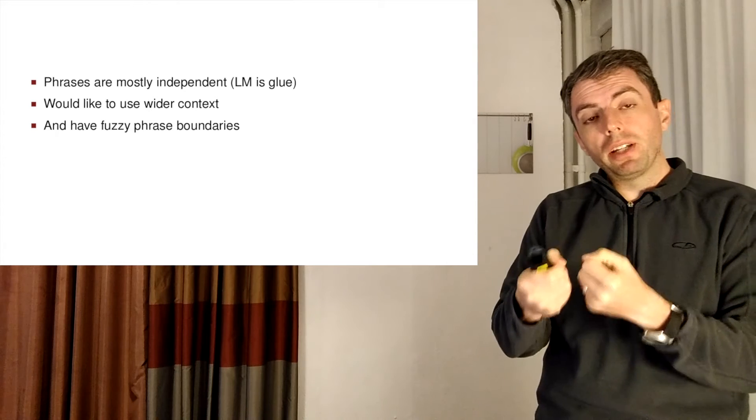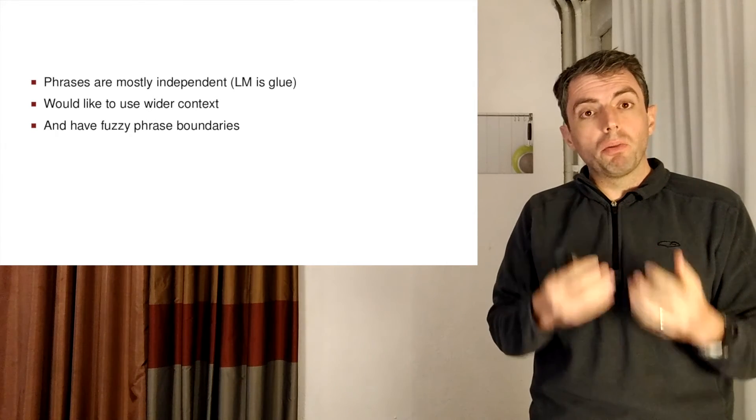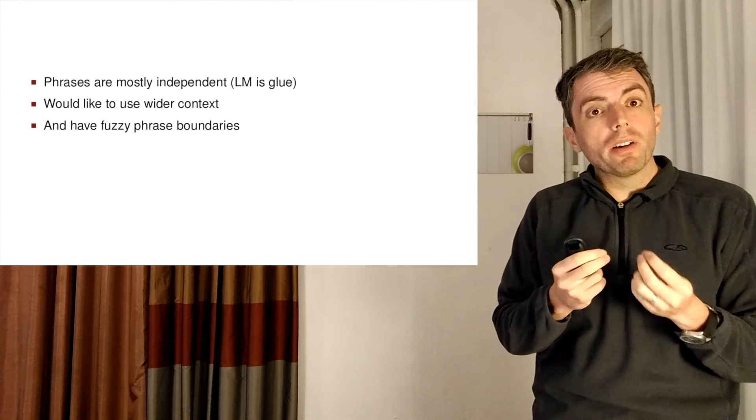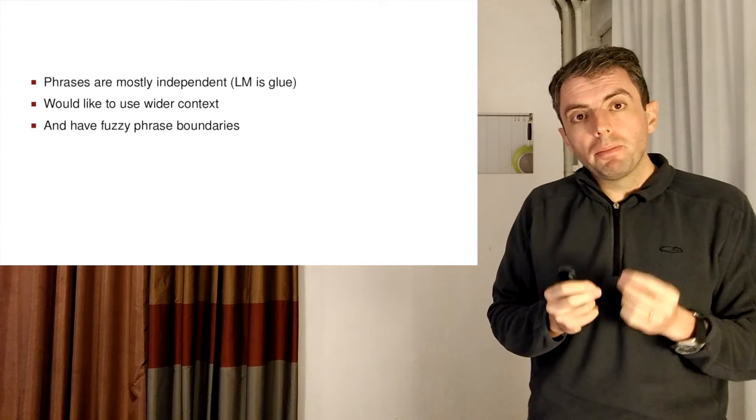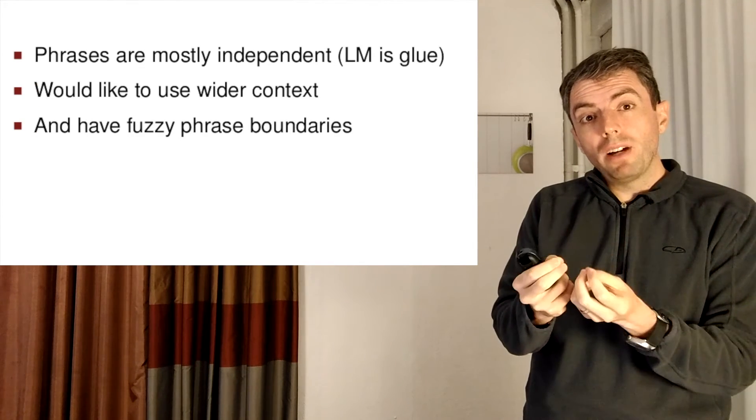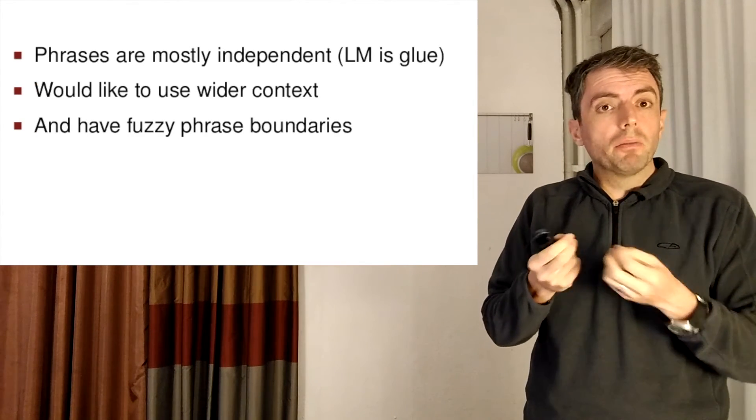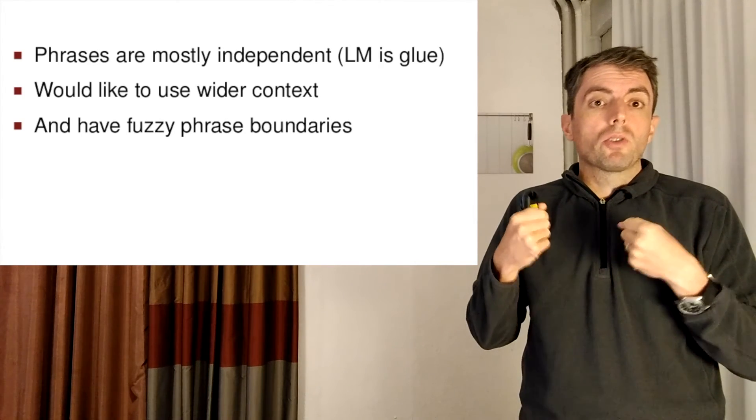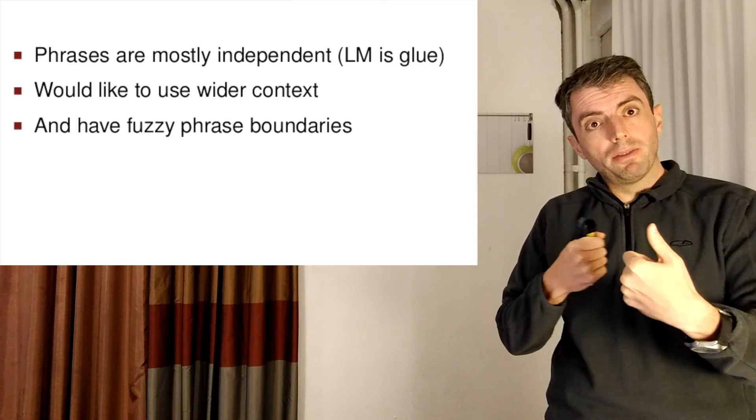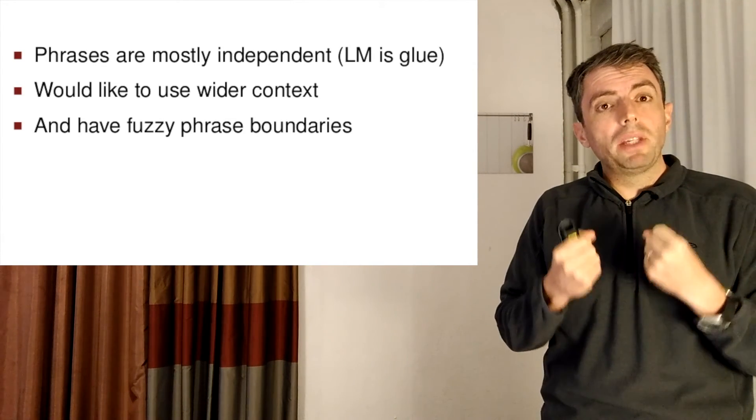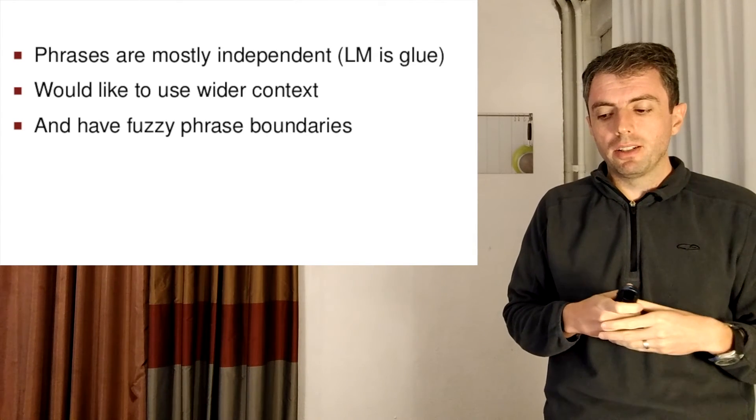And hopefully what you take away from this is that phrases are important. Phrases allow you to use context in your translations. But where are the problems? So in the phrase-based translation model, you can only use the context of your individual phrase. And the phrases are mostly independent. You depend on the language model to glue together translations across different phrases in the same sentence. And that often isn't enough. You want to be able to use wider context to choose the correct translation.